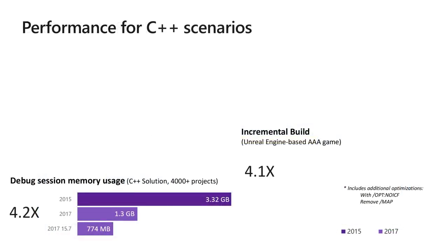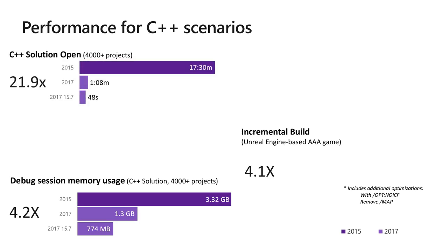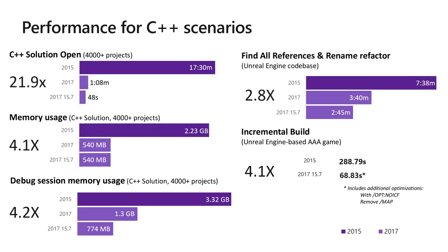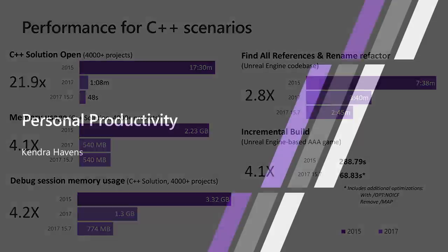That was all .NET improvements. We also wanted to call out a lot of the C++ performance improvements across all C++ scenarios: solution open, memory usage, debugging, renaming, refactoring, and incremental builds — all multiple times faster than before. All of these benchmarks were run with the open-source Chromium solution, which is over 4,000 projects.